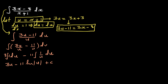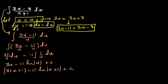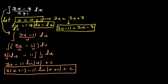Now we put back what u is, since we started with x. u equals x plus 1, so the final answer is 3(x plus 1) minus 11 times natural log of (x plus 1) plus C. It's good practice to differentiate this and check that you get the original expression back.